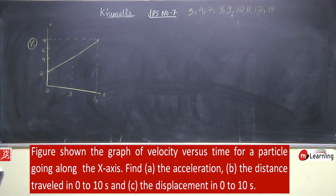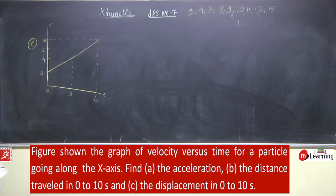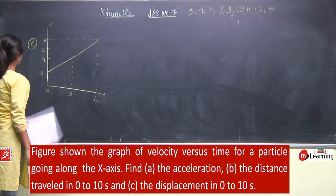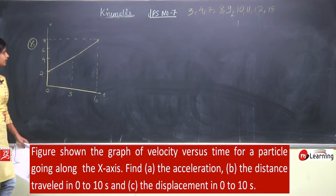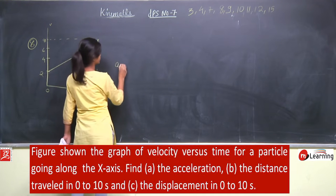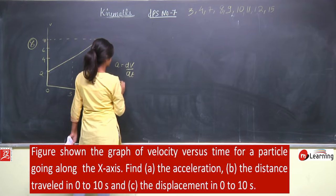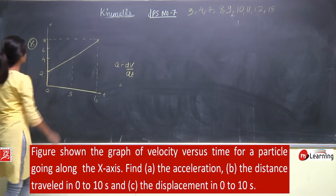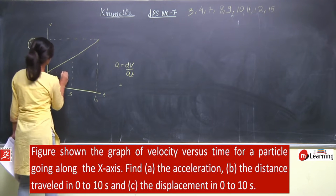Acceleration निकालने के लिए क्या करें? Velocity constantly increase होते जा रही है, तो acceleration constant है — यह तो पता चल जाता है। और एक तरीका यह है कि acceleration इसका slope होता है। Acceleration क्या होता है? dv by dt. dv by dt इस graph का slope होगा, तो इस graph का slope क्या हो जाएगा?